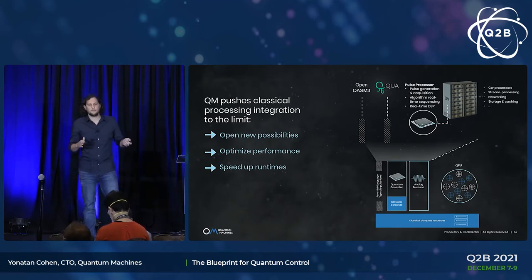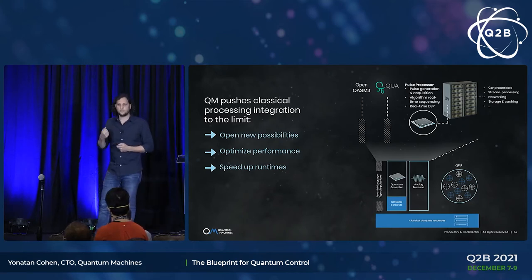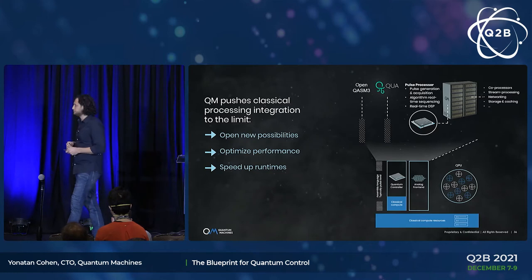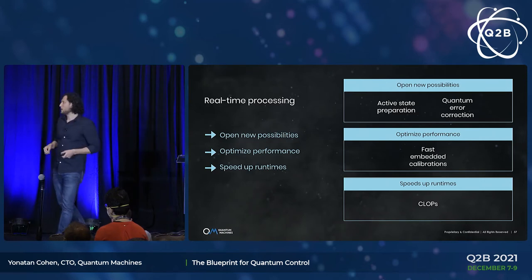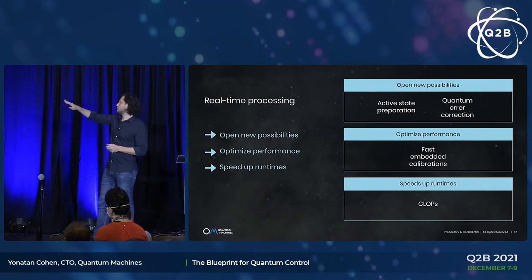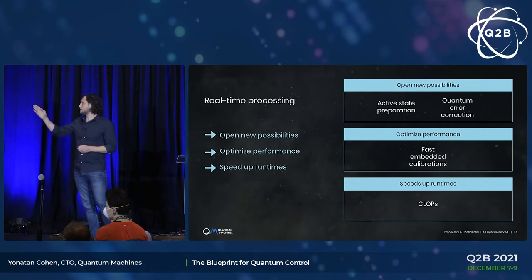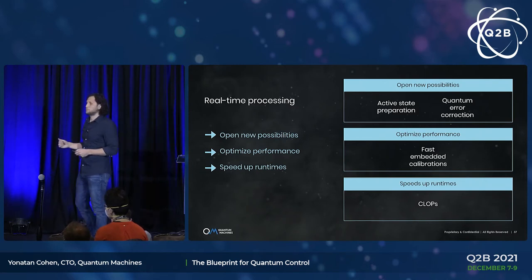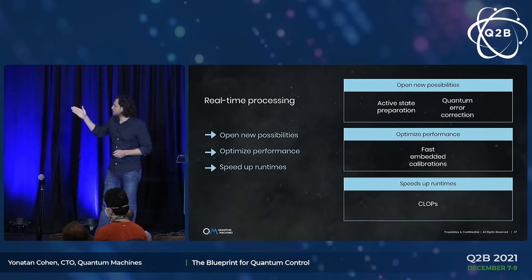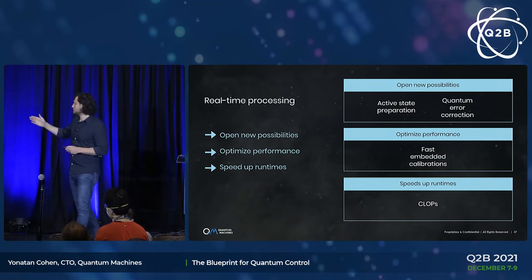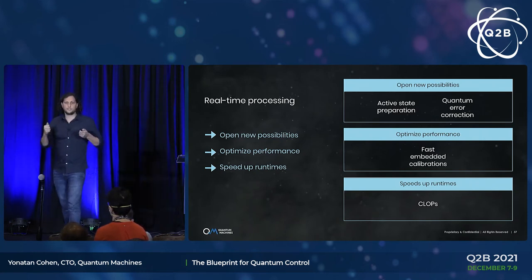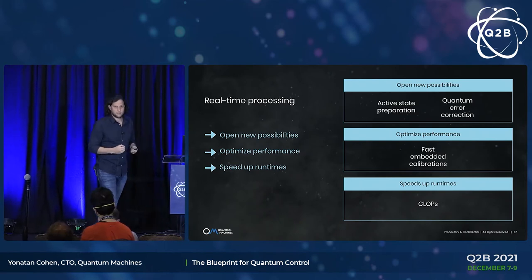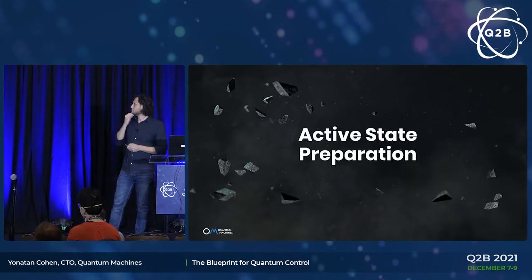I want to give you several examples of how we at Quantum Machines are providing these capabilities and pushing them to the limit. First, I want to focus on real-time processing done on our pulse processor, looking at examples such as active state preparation and quantum error correction, then fast embedded calibrations, and lastly the CLOPS benchmark recently announced and defined by IBM.